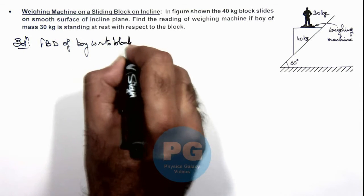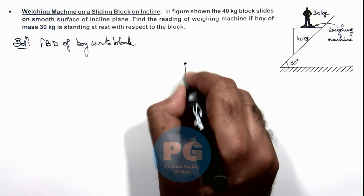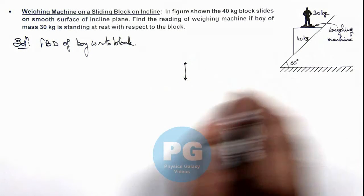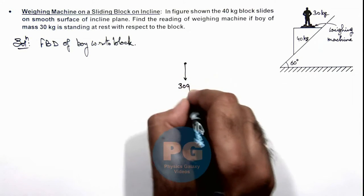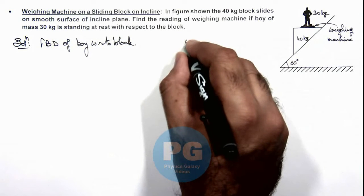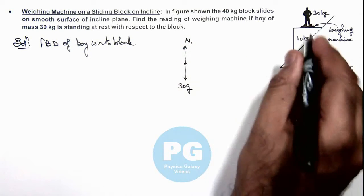As he is at rest on the block, if we draw the free body diagram on the boy, in downward direction his weight is acting, that is 30g. Upward is the normal reaction N, which is read by the weighing machine.